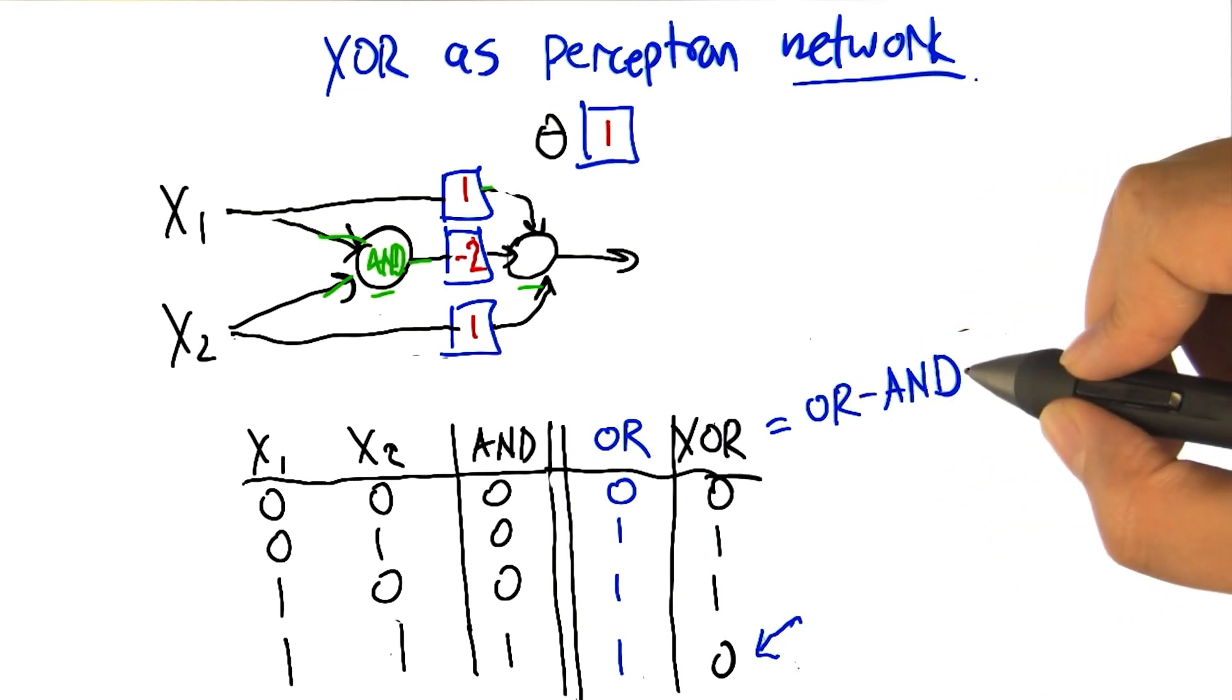It's actually OR minus kind of AND times two. Right, and there you go. And of course there's an infinite number of solutions to this.